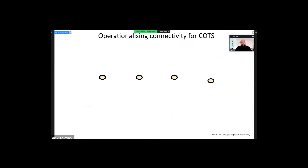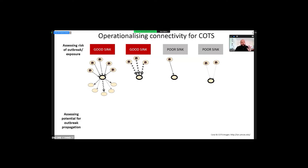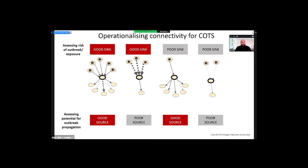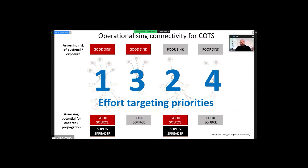When we talk about operationalizing connectivity models for COTS, we want to find reefs that are going to be at high risk of outbreak or exposure to COTS larvae — so they're going to be good sinks. We also want to find reefs that have the potential to propagate this outbreak to other reefs — good sources — which can create a whole cascade of outbreaks. These are super spreader reefs. Once we have these categories, we can then do some initial prioritization of how we could target effort across the reefs we've identified.